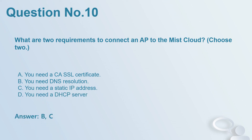Question number 10: What are two requirements to connect an AP to the MIST cloud? Choose two. A. You need a CASSL certificate. B. You need DNS resolution. C. You need a static IP address. D. You need a DHCP server. Answer: B and D.